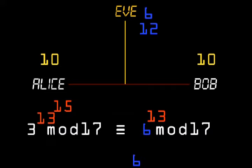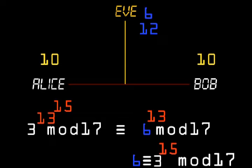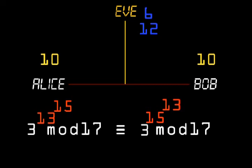Now consider Bob. The 6 he received from Alice was calculated as 3 to the power 15, mod 17. So his calculation was the same as 3 to the power 15 to the power 13. Notice they did the same calculation with the exponents in a different order. When you flip the exponent, the result doesn't change.